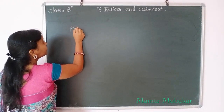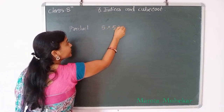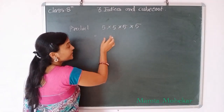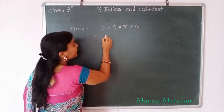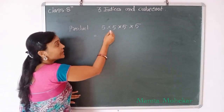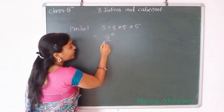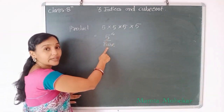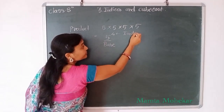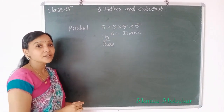We write the product like that: 5 into 5 into 5 into 5. Now what is the index form? We can write down 5 raised to power 4. This is called as index form. In this, 5 is called as base and 4 is called as index. And this whole expression, 5 raised to power 4, is called as index form.